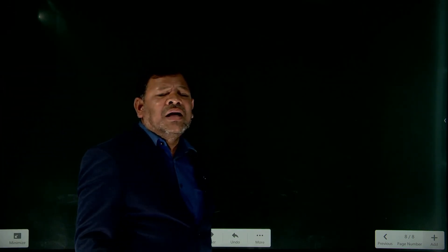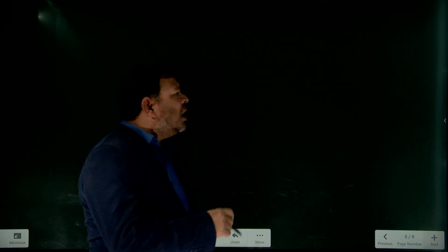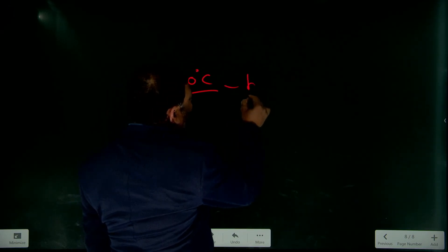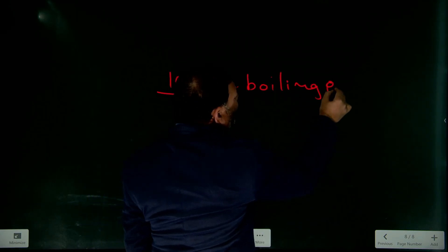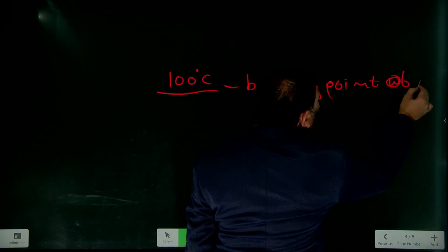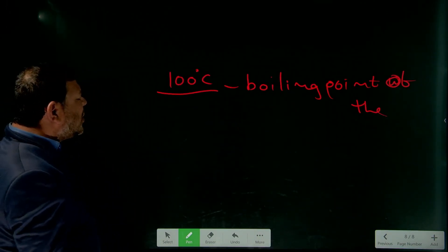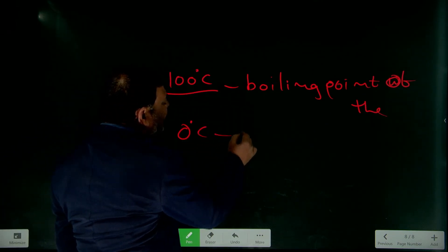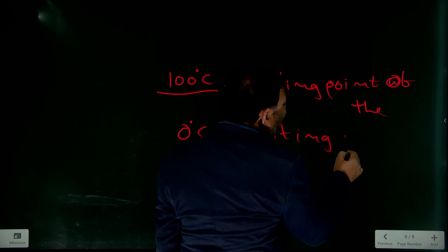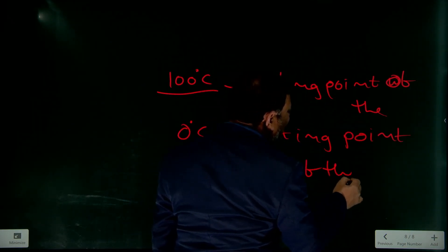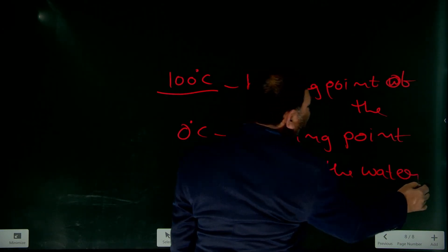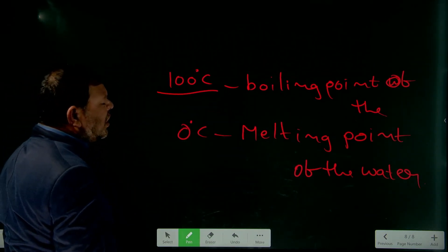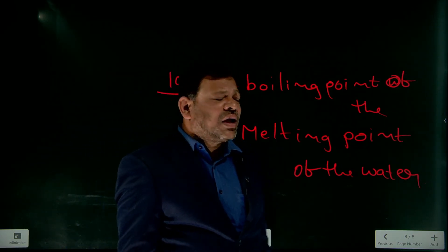What is the boiling point of water? At 100 degrees centigrade, water changes into water vapor — that is called evaporation. So 100°C is the boiling point of water. What is the melting point of water? At 0 degrees centigrade, water changes into ice — that is the melting point of water.